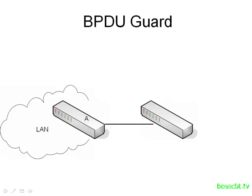If this new switch becomes the root bridge, we could have created suboptimal performance on the network. We could have broken our design — we may now have new traffic flows. Also, just by virtue of creating the root bridge election, it could be very disruptive to user traffic. We could have ports changing states, going from blocking to forwarding or forwarding to blocking. This could definitely be disruptive to our network.